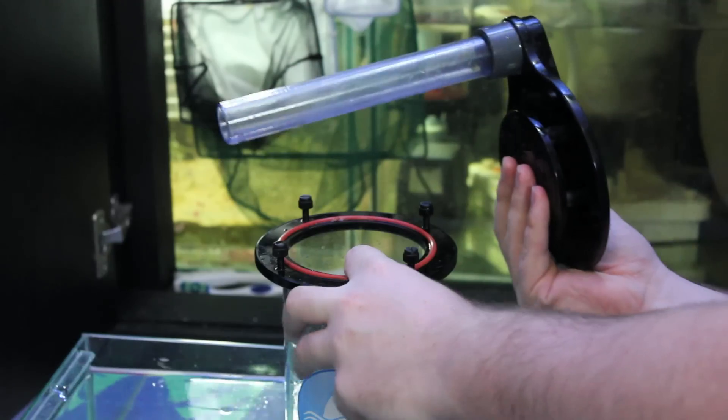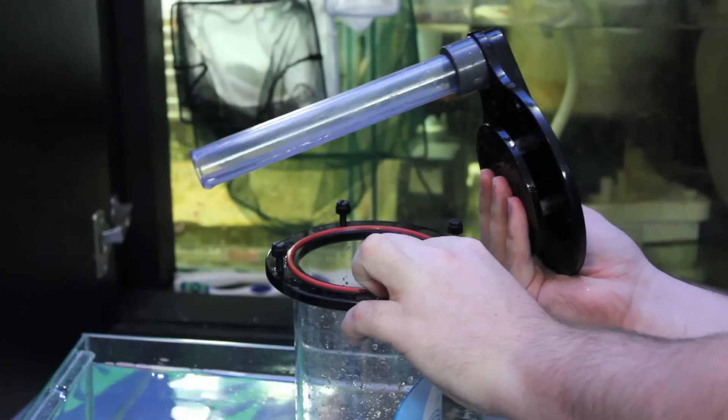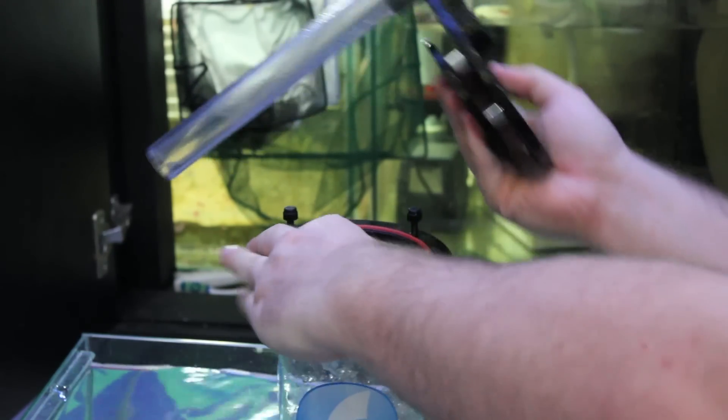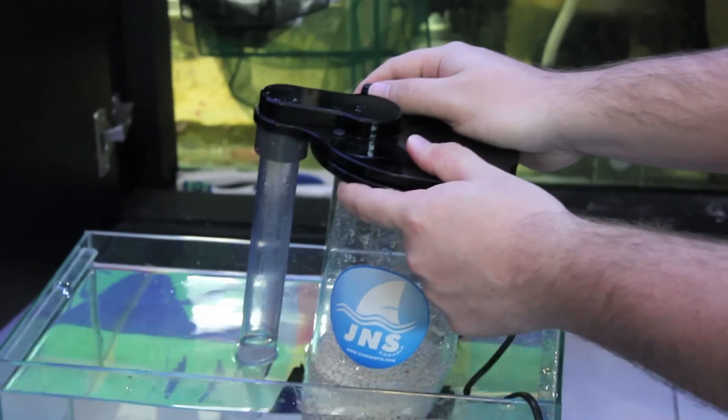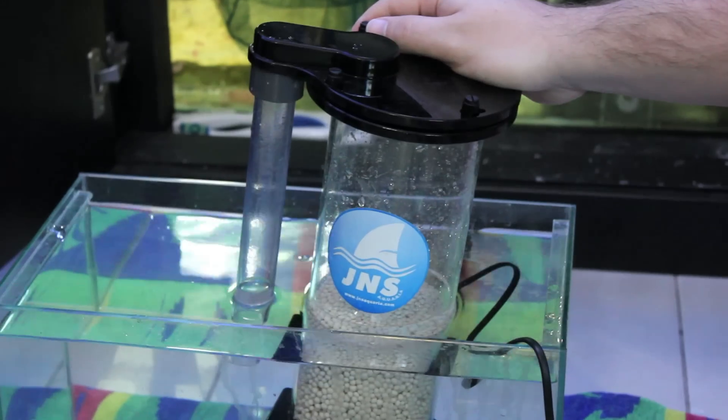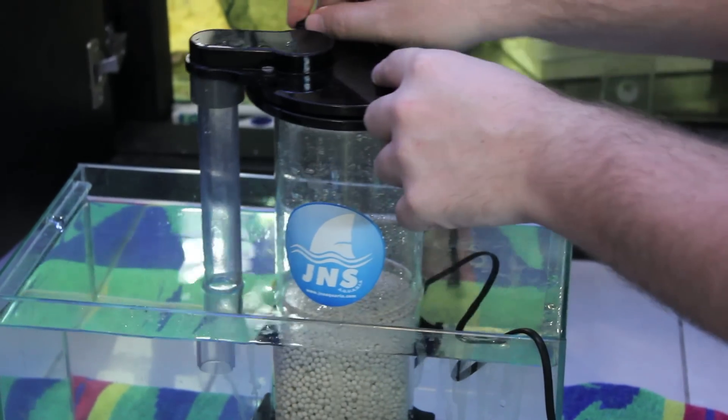For example, if you want the water to come in from a particular direction, you can change the orientation of the reactor and then put this at a different angle. In our case, I want it to come out this side, so I'm going to put it this way.